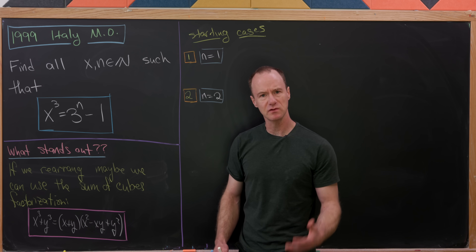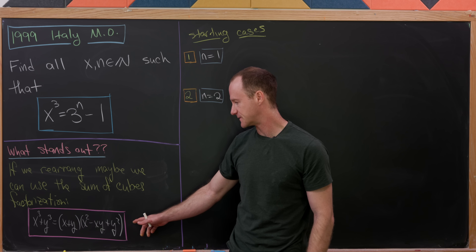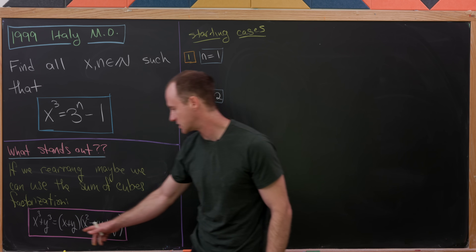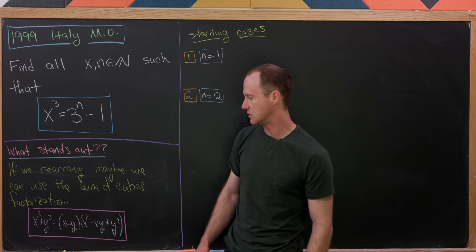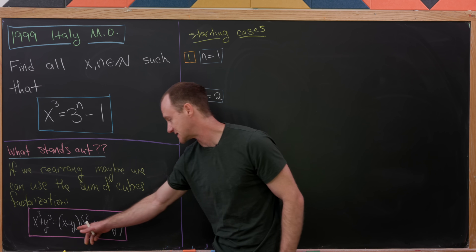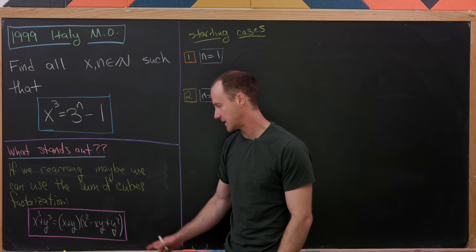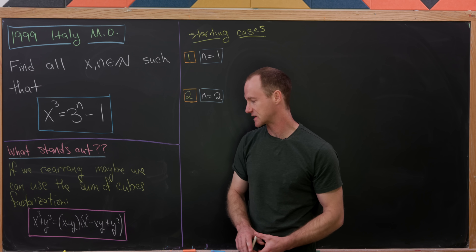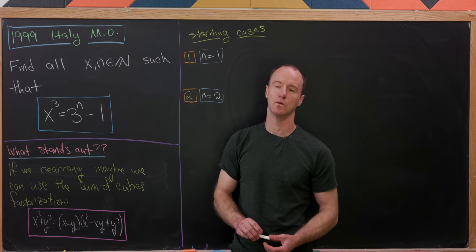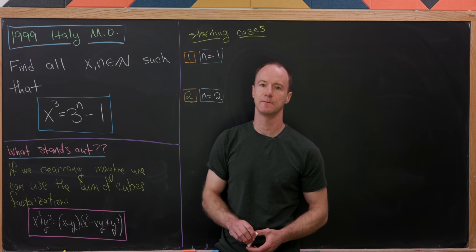Let's recall the sum of cubes factorization: x³ + y³ factors as (x + y)(x² - xy + y²).